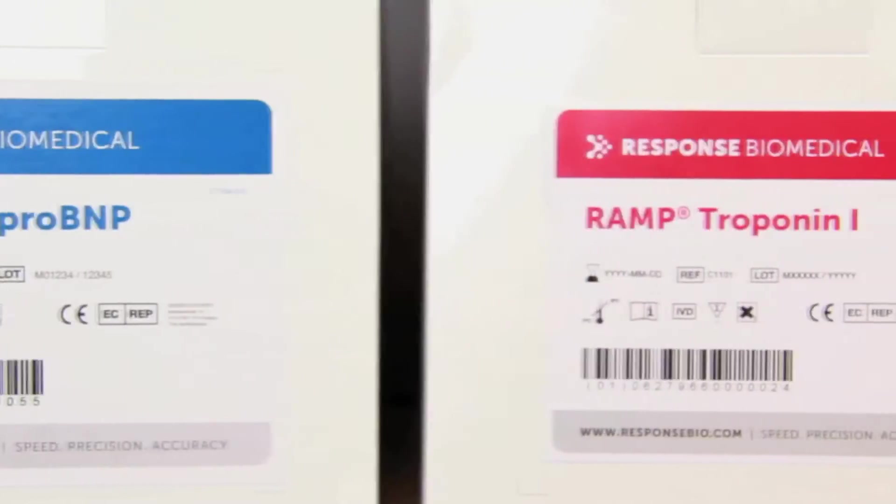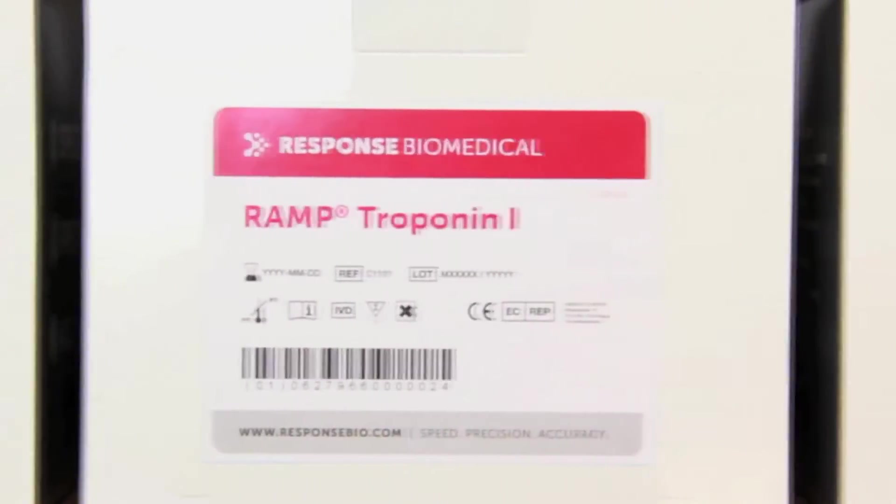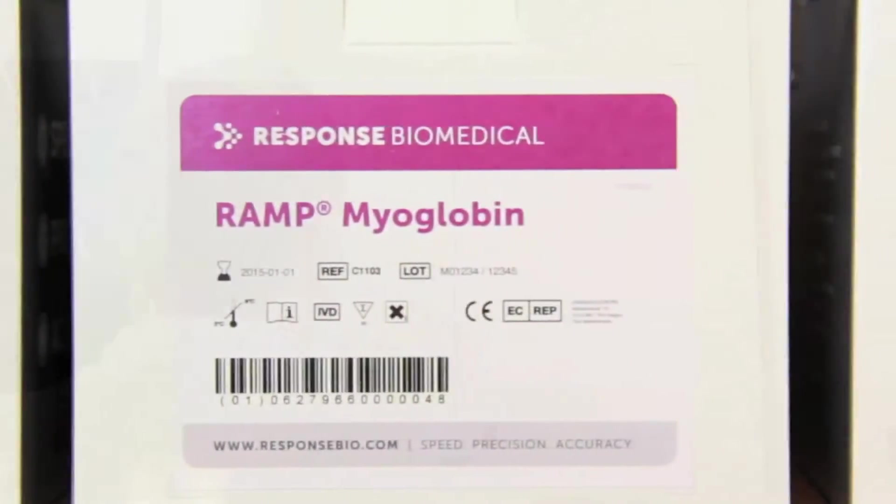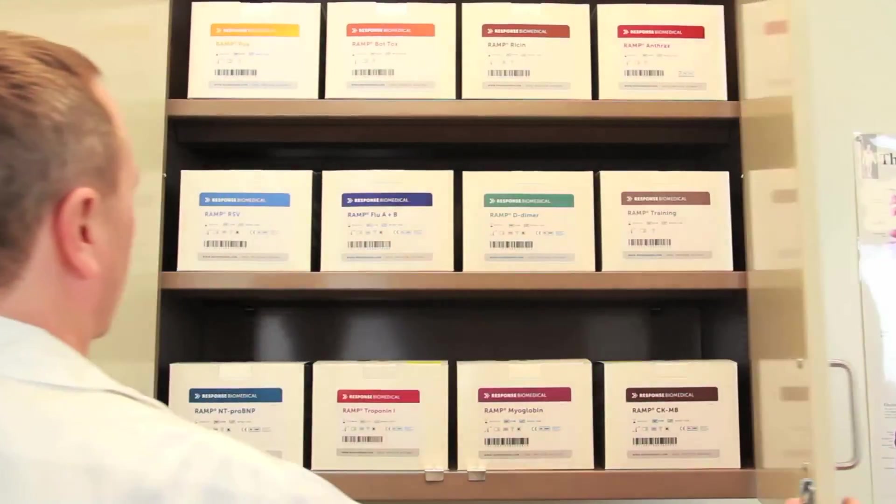The RAMP 200 can be used for the testing of cardiac biomarkers and infectious disease markers in a laboratory setting, as well as a number of non-clinical tests for biodefense and environmental applications.